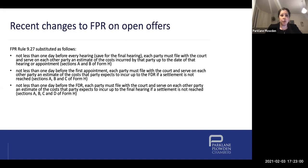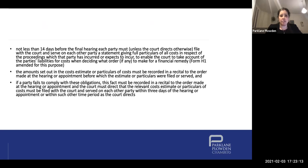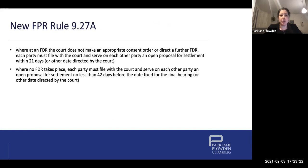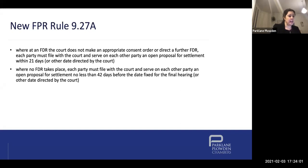In terms of recent changes, they are very important because they came into effect July last year and have an impact on how you can draft orders, especially after an FDR. Rule 9.27 has been amended and deals with cost estimates. The new rule 9.27A requires parties to file an open proposal for settlement within 21 days from the FDR if the parties don't settle, or 42 days before the final hearing. That's very important because if you feel your client is making a reasonable proposal, you can start to think about asking for costs at the final hearing if the other side are not negotiating reasonably.